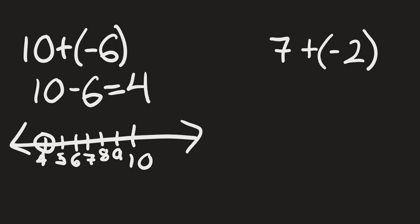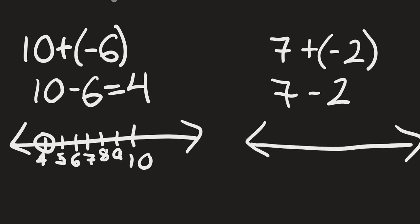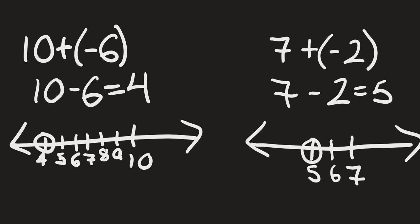For the next one we have 7 plus negative 2. Once again, whenever we have a positive and a negative right next to each other it turns out to be a negative, and we will have 7 minus 2. We start off at 7 and go 2 units to the left — 6 and 5. 7 minus 2 is 5.